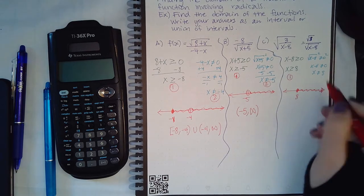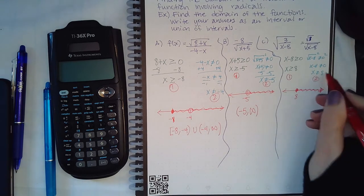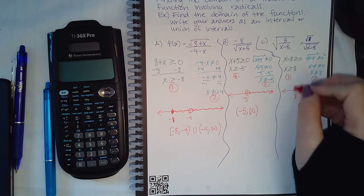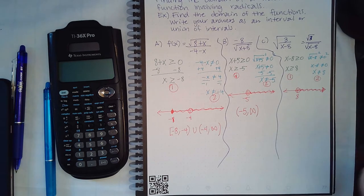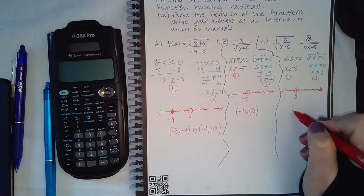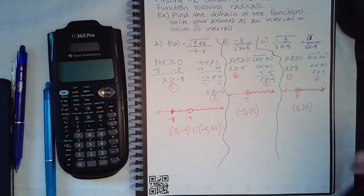So again the same steps apply. Graph the inequality first. Here's eight, I have a dot, everything bigger than eight is the inequality. Second thing, remove the eight, so instead of a solid dot there now there's a hole there. And to put this in interval notation I only need one interval from eight to infinity.